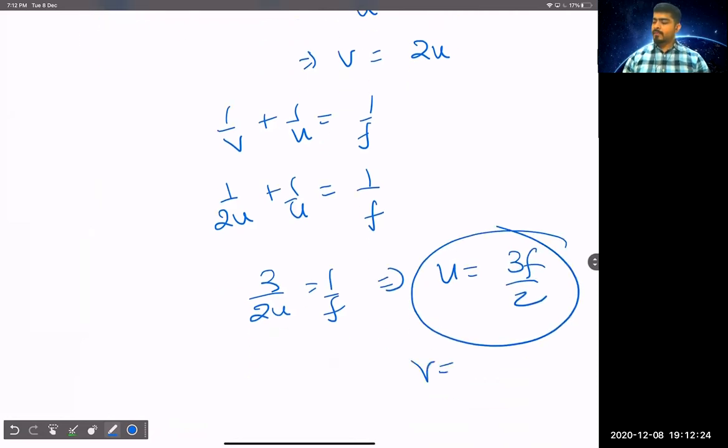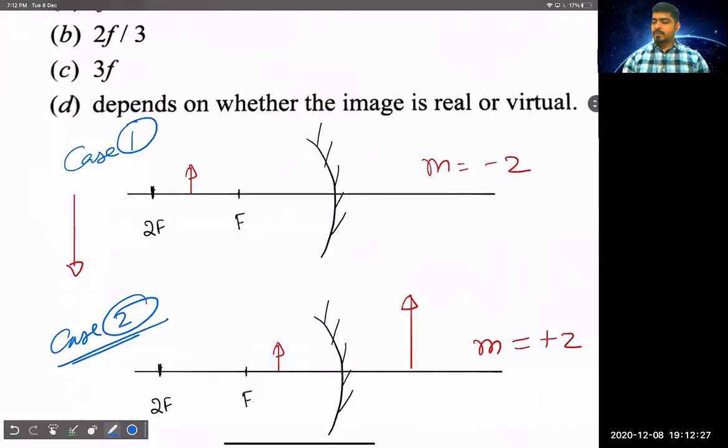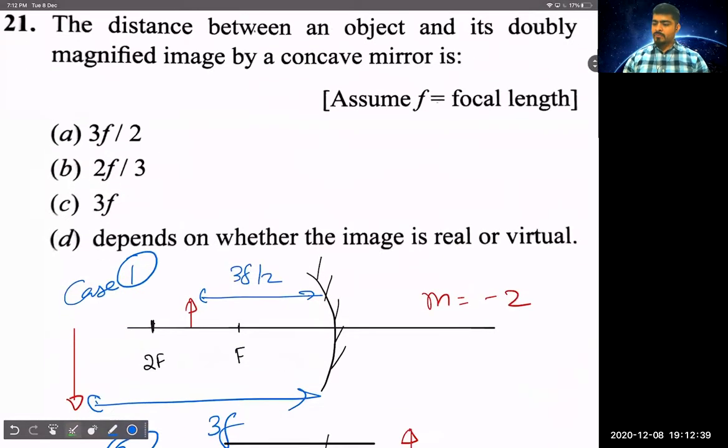Then, v is 3f. So, this is 3f by 2, and this is 3f. So, the distance between them is 3f by 2. Correct? 3F by 2, option A correct, okay.